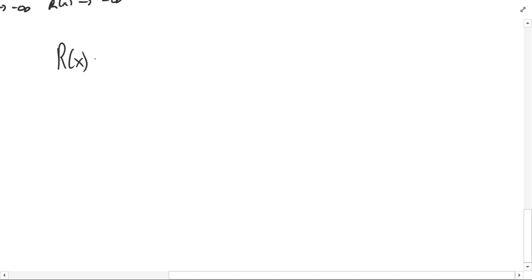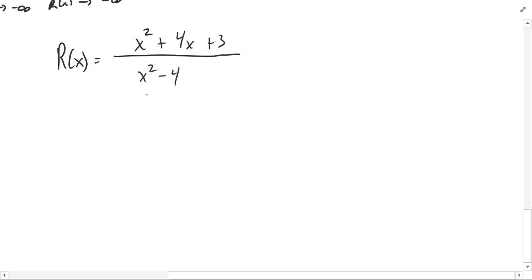Next up is the short run behavior of polynomial functions, and you want to start with your rational function. Let's start with something like x squared plus 4x plus 3 over x squared minus 4. The first thing you want to do — these things are a lot easier to work with when they're in factored form, so you want to factor both the top and the bottom.